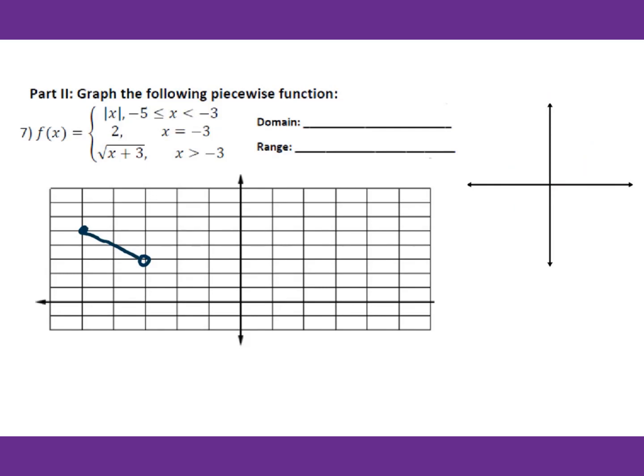Now the second piece: x equals negative 3, y equals 2. This will be a single point at (negative 3, 2) — closed circle.